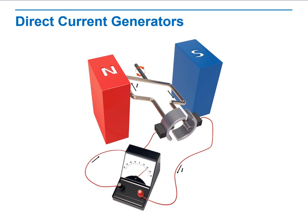Then we will discuss direct current generation. My question to you: what difference do you notice between the direct current generator and the alternating current generator? The answer is the AC generator has two solid rings and the DC generator has a single split ring. This is a very important difference.